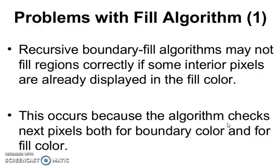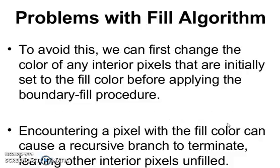Problems with the boundary fill algorithm: recursive boundary fill algorithms may not fill regions correctly if some interior pixels are already displayed in the fill color. This occurs because the algorithm checks next pixels both for boundary color and for fill color. To avoid this, we can first change the color of any interior pixels initially set to the fill color before applying the boundary fill procedure. Encountering a pixel with fill color can cause a recursive branch to terminate, leaving other interior pixels unfilled.